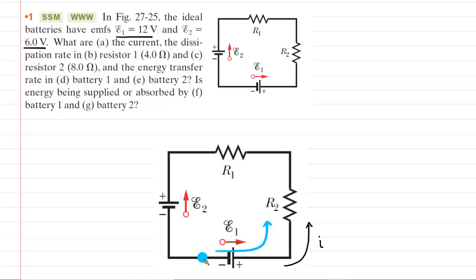Traveling counterclockwise, the first circuit element we encounter is battery one, and we're moving in the same direction as the EMF. When you move in the same direction as the EMF of a battery, your potential change will be positive. So to begin our loop rule, we write a positive potential change equal to EMF one.